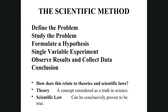Theories are concepts considered as truths in science — there's a lot of data supporting them, but they cannot be proven. The theory of evolution, for example, can't be proven because some organisms that appear in the fossil record are still alive. Scientific laws, on the other hand, can be conclusively proven through experiments or math.